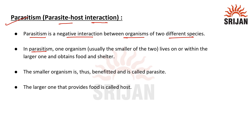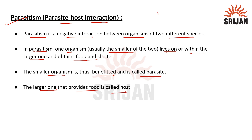In parasitism, one organism — usually the smaller one of the two — lives on or within the larger one and obtains food and shelter. The smaller organism is benefited and is called the parasite, whereas the larger one provides food and is called the host. Hence, parasitism is a positive-negative type of interaction.